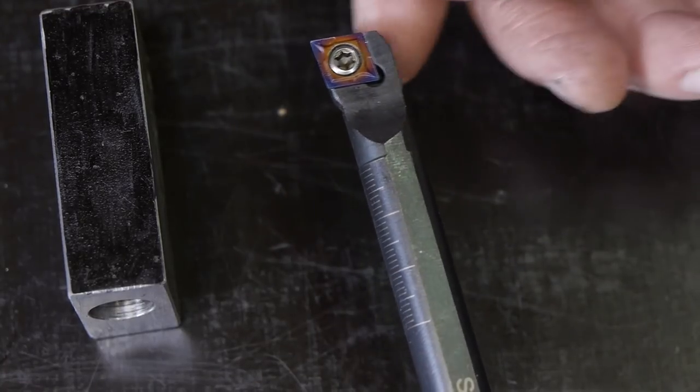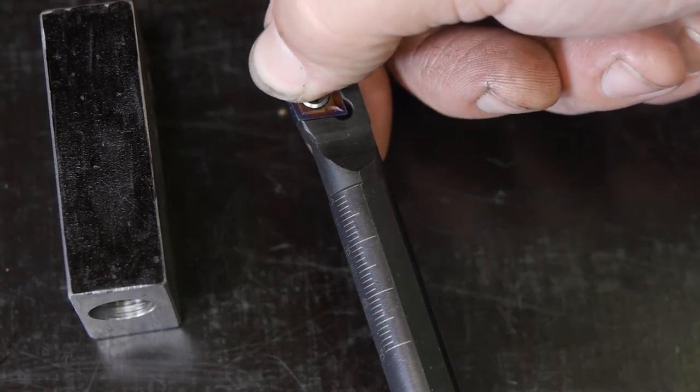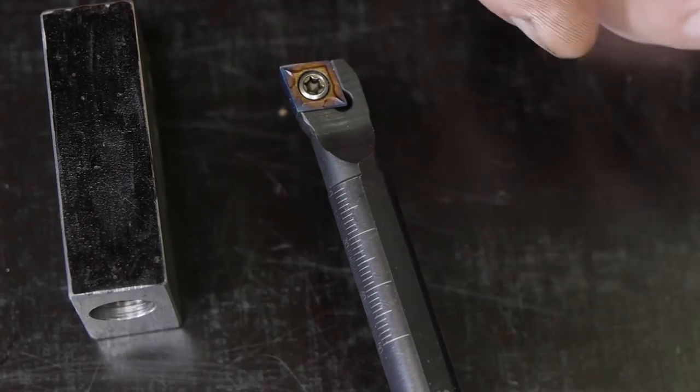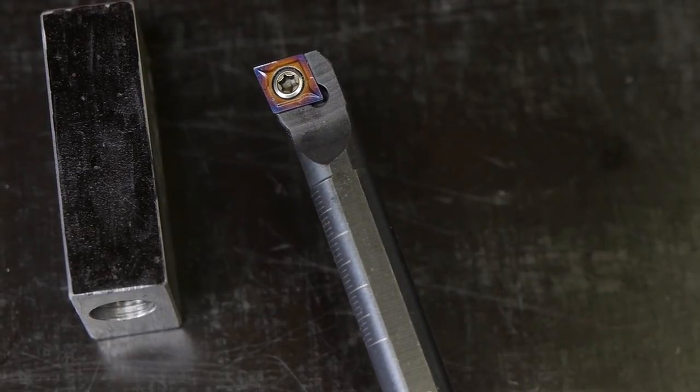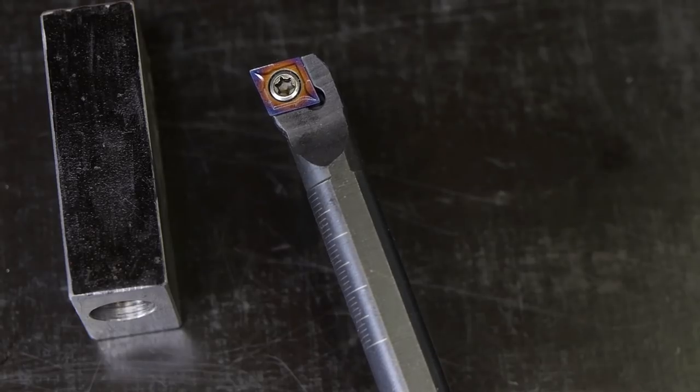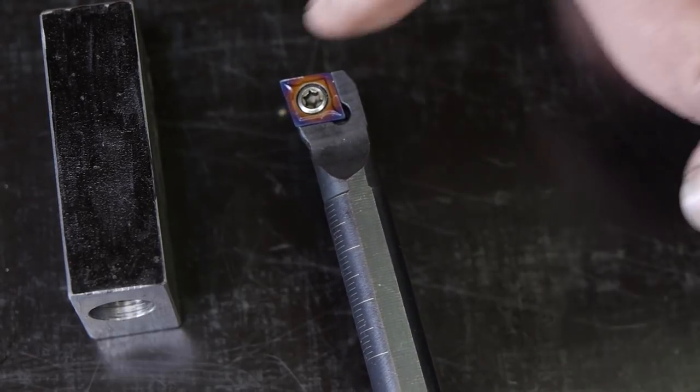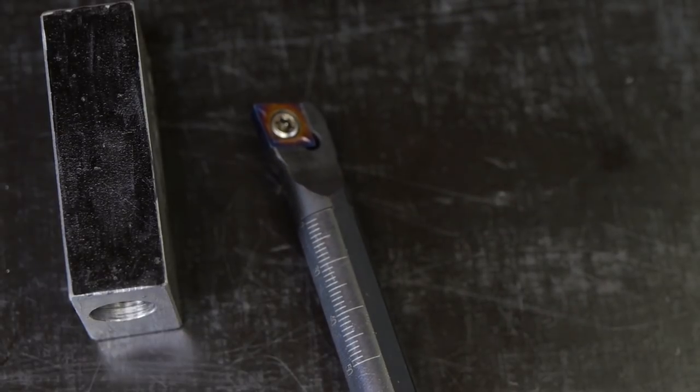Because when you take a cut with a boring bar, the pointy bit will be forced down a little as the shank torques up. And then this will dig in and you'll remove more material than planned.